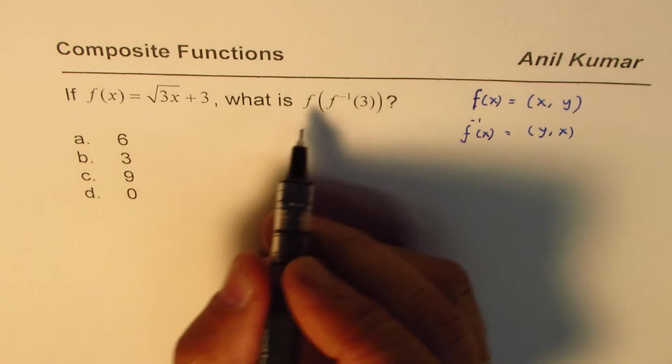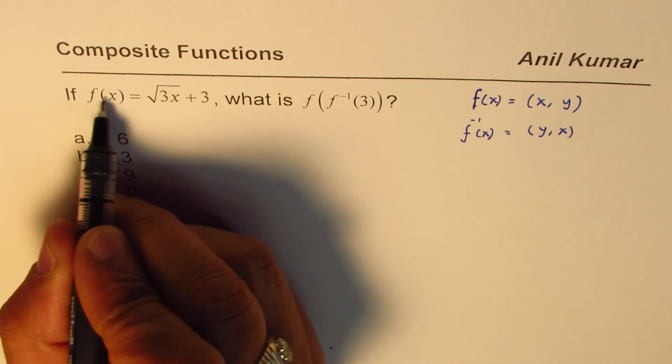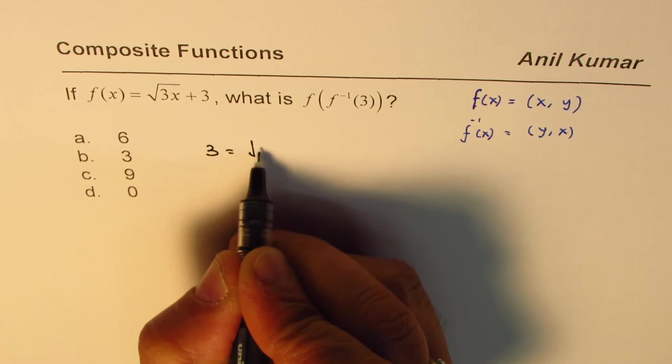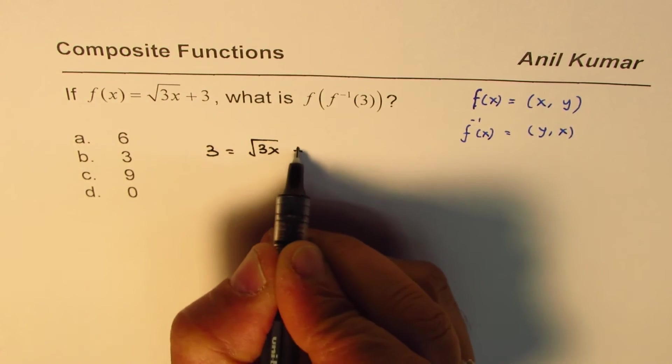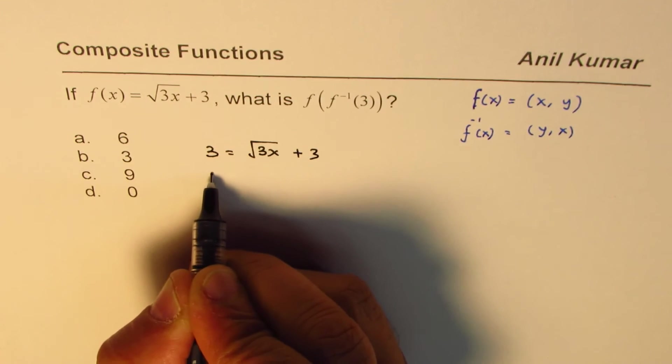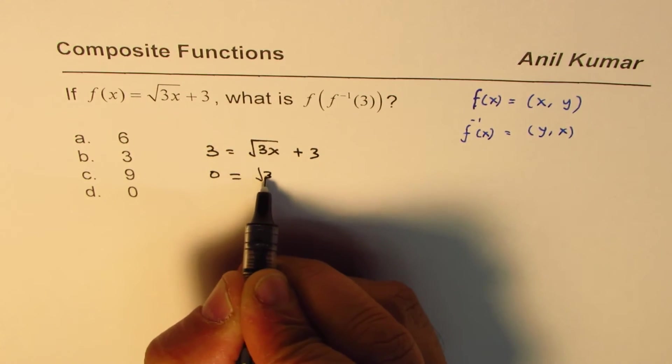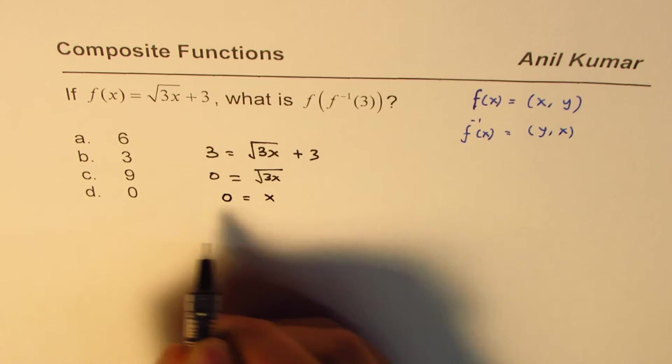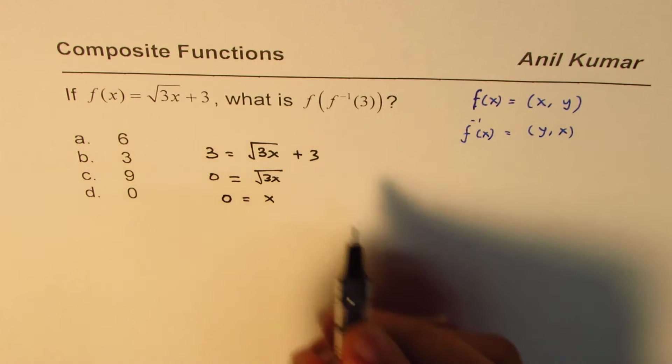Now let me solve this question for you. We have f(f inverse of 3). In this function substitute 3 here, so you get 3 equals square root of 3x plus 3. When you take this, 0 equals square root of 3x, and that gives you x equals 0.